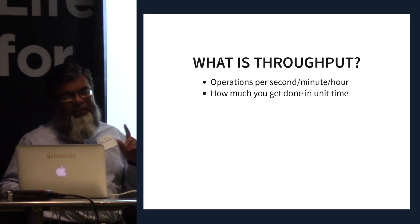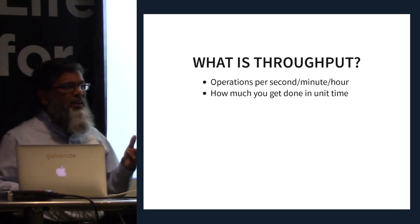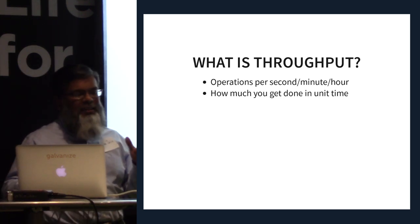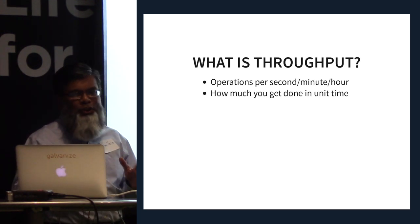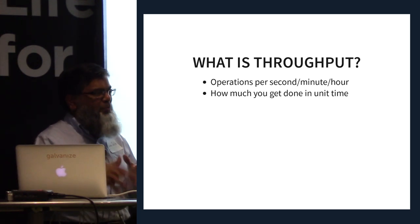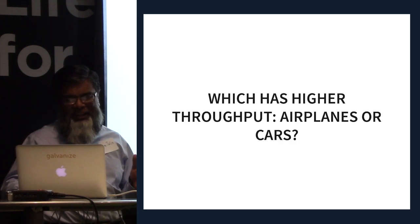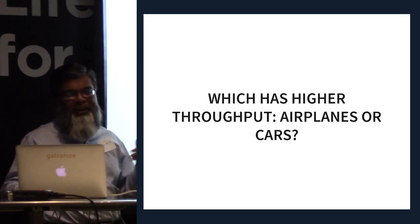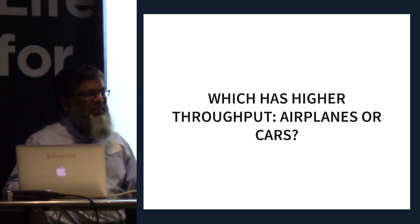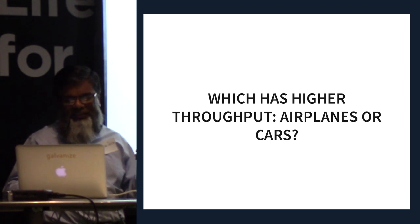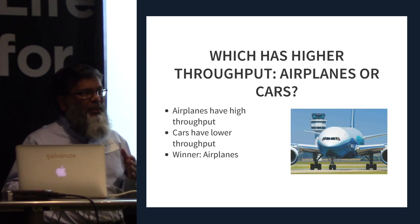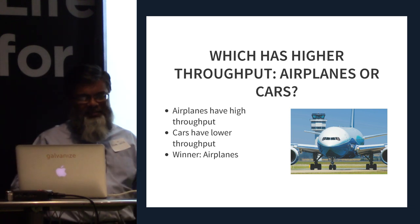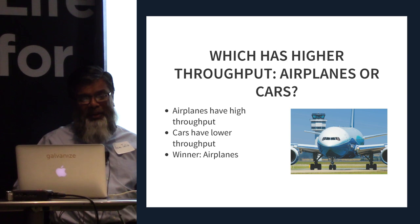Throughput is the opposite — higher throughput is better, lower is worse. Conceptually, throughput is how much you can get done within a unit of time: number of operations per minute, or just amount of work. Continuing the analogy, if work means people being transported, which has higher throughput: airplanes or cars? Airplanes — right. Airplanes transport more people over longer distances than cars in the same amount of time.